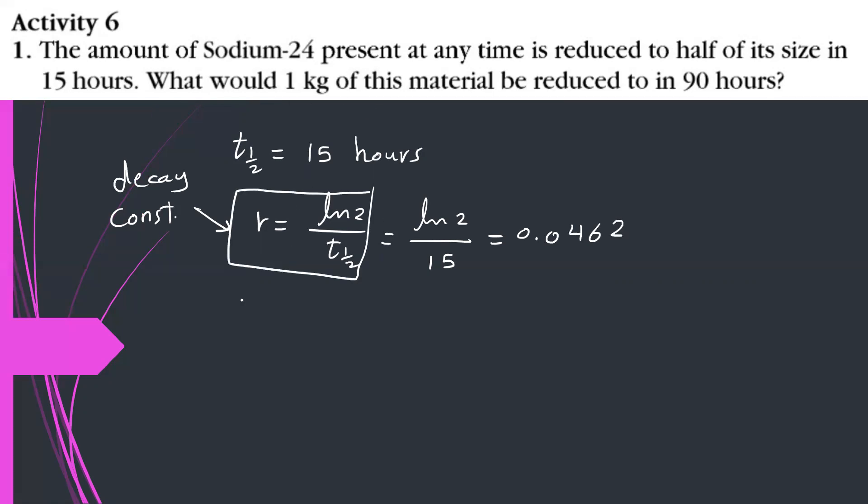What would 1 kg of this material be reduced to in 90 days? Write the formula again, Q(t) equals Q naught e to the negative rt. So Q after 90 days, Q 90 is equal to, you can write 1 kg as 1,000 grams, e to the negative r, 0.0462 times 90. By using calculator, you can find the answer. The answer is 15.6 grams, approximately.